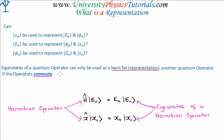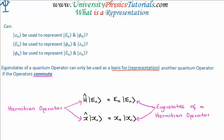The answer is as follows. Eigenstates of a quantum operator can be used as a basis or a representation for another quantum operator if the operators in question commute. For example, if you want the position eigenstates to be used as a representation for the energy eigenstates, you can do so if the position and energy operators commute.